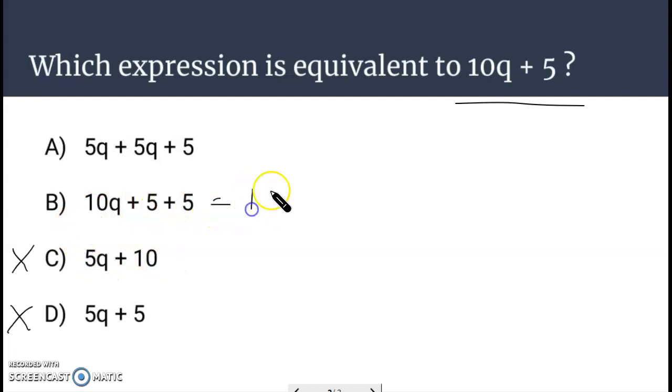Let's simplify B and see what we get. 10q plus 10. Close, but not quite. So hopefully it's A. 5q and 5q make 10q. And then we have the 5 left over. So A is our winner here. 10q plus 5 matches.